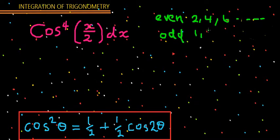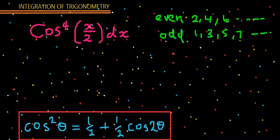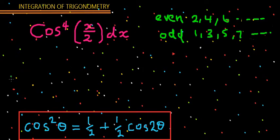An odd number is one that is not divisible by two — when you divide it by two, it gives a remainder. So check whether the power is even or odd before solving. Here the power is 4, which is even, so we use this identity. For cosine, the identity has a negative sign. For odd numbers, you split off one factor and solve the remaining part.